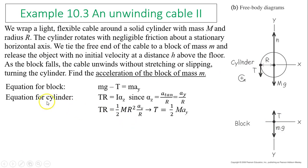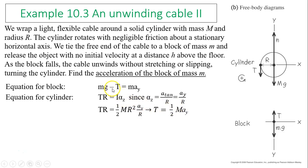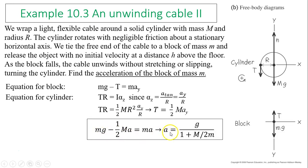There are three equations. The first equation is for the block: Mg − T = m times a. The second equation is for the cylinder: T times R = I times alpha. The third relates alpha and acceleration: alpha equals a_y over R, where a_y is the block's acceleration and alpha is the cylinder's angular acceleration. Substituting I = (1/2)MR² and alpha = a_y/R, we solve T = (1/2)M times a_y. Substituting this T into the first equation, we solve for a_y: equals g divided by (1 + M over 2m).